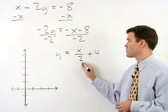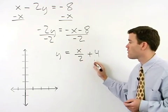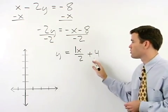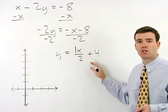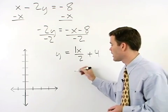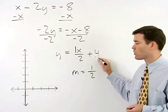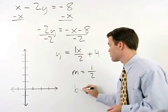y equals x over 2 plus 4 can be thought of as y equals 1x over 2 plus 4, so that you can see that our slope or m is 1 half and our y intercept or b is 4.